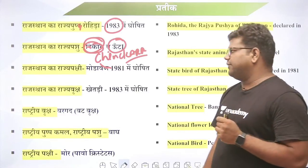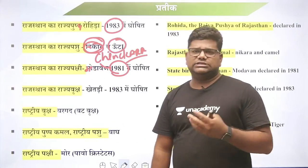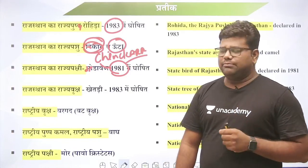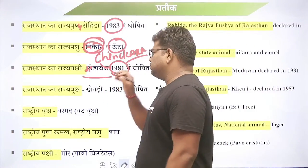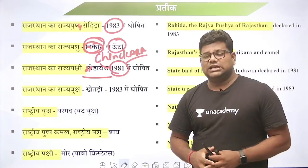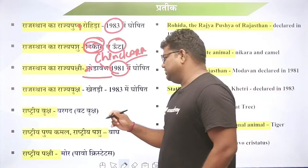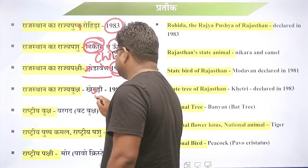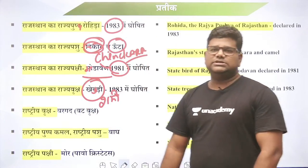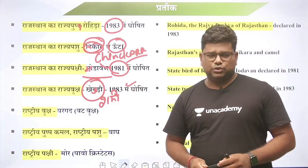Great Indian Bustard, यानि की Godavan, जिसे 1981 में घोषित किया गया था। IUCN की लिस्ट के अंदर Godavan critically endangered यानि की गंभीर रूप से संकट ग्रस्त है। राजस्थान का राज्य पक्षी है Godavan। इसी तरीके से राजस्थान का राज्य वृक्ष है खेजड़ी, जिसे शमी का वृक्ष भी कहा जाता है, जिसका scientific name है Prosopis cineraria।